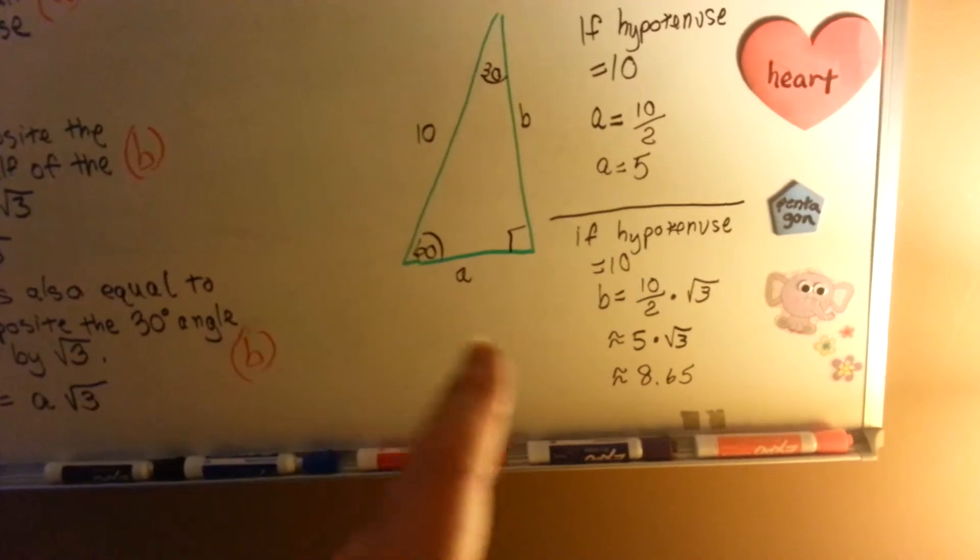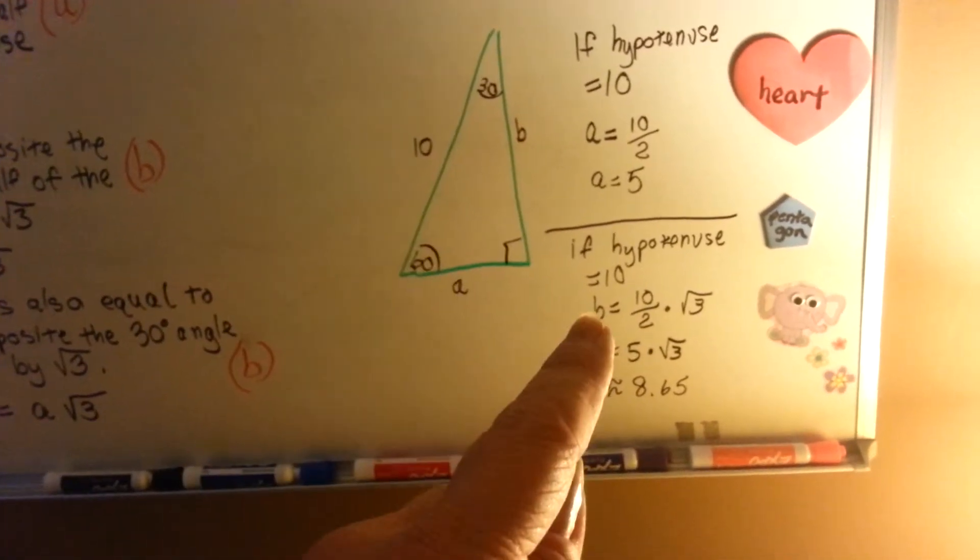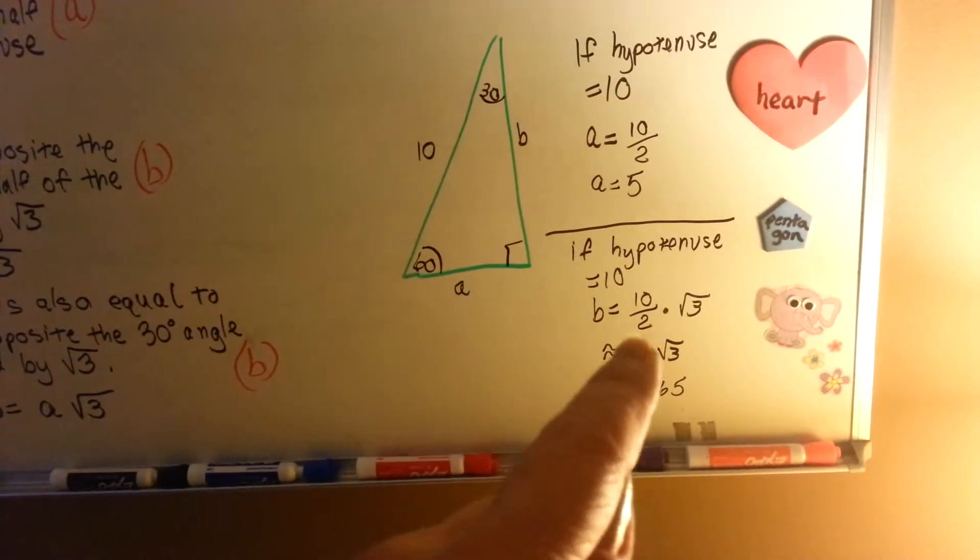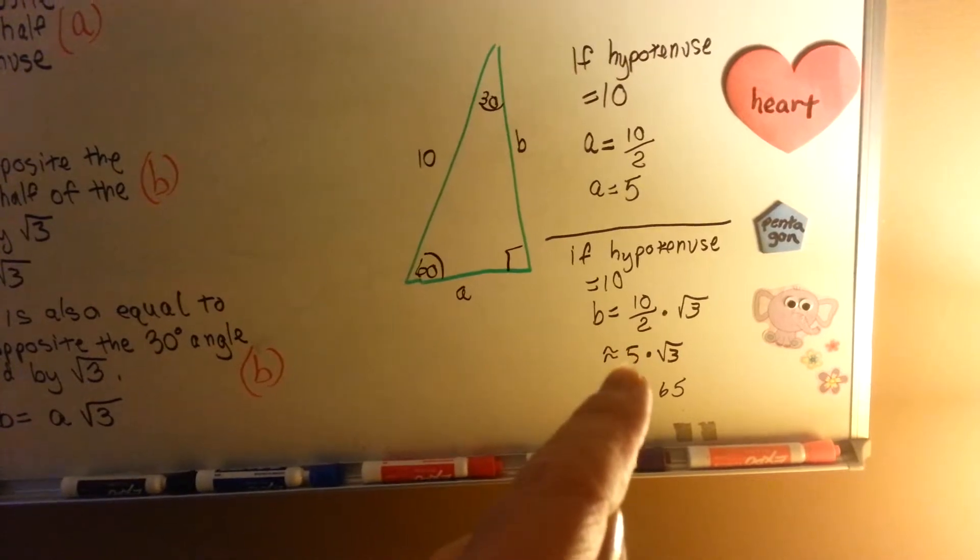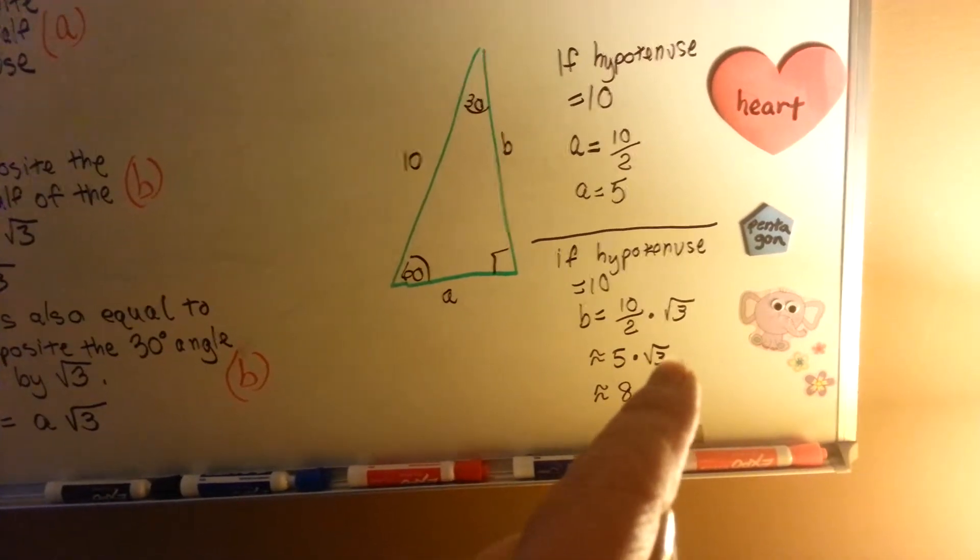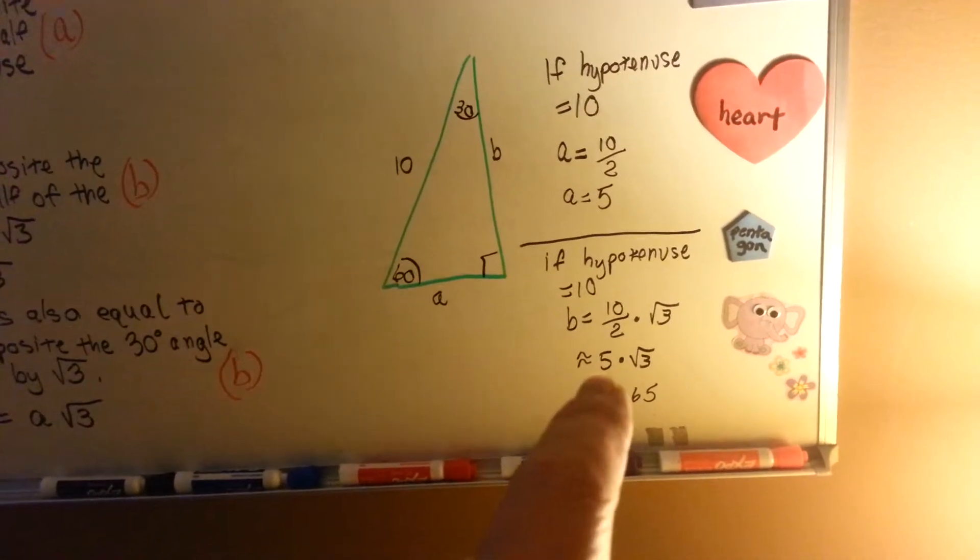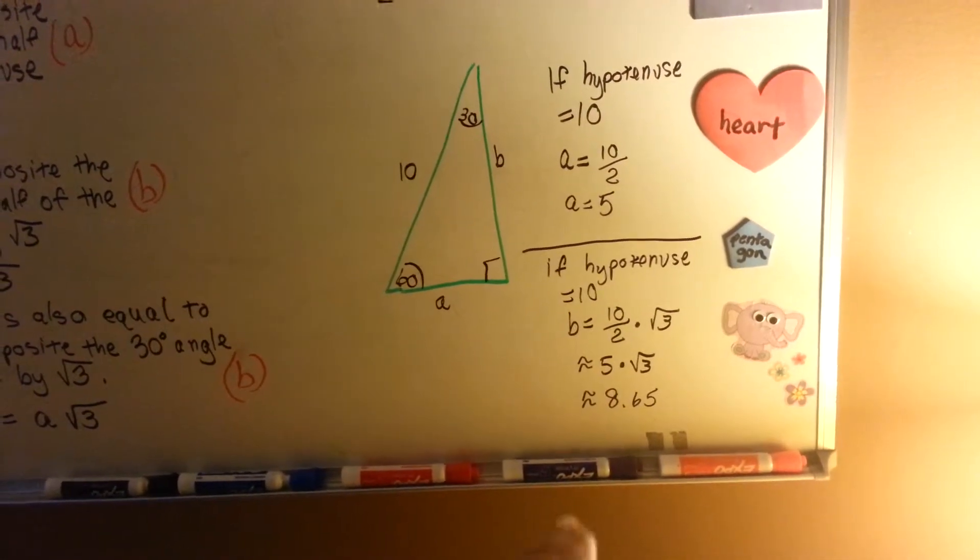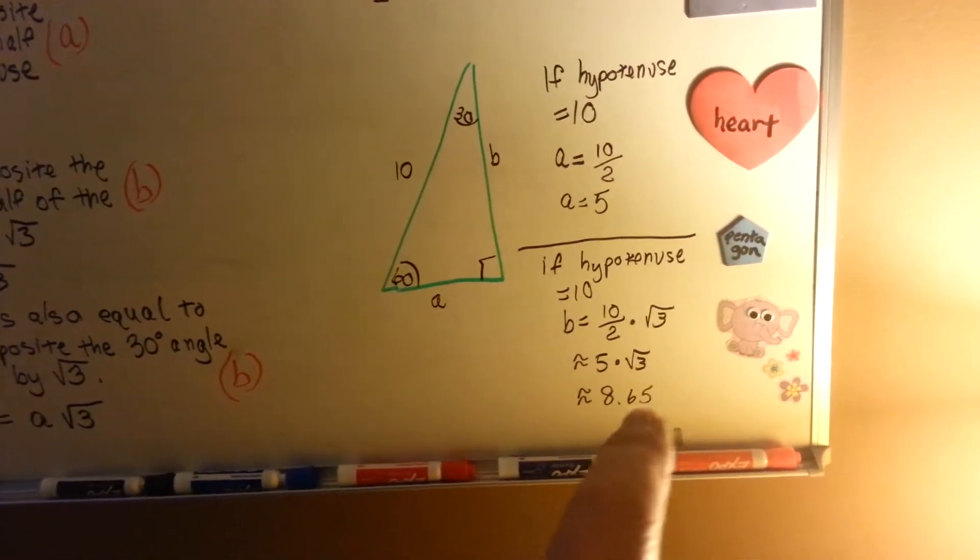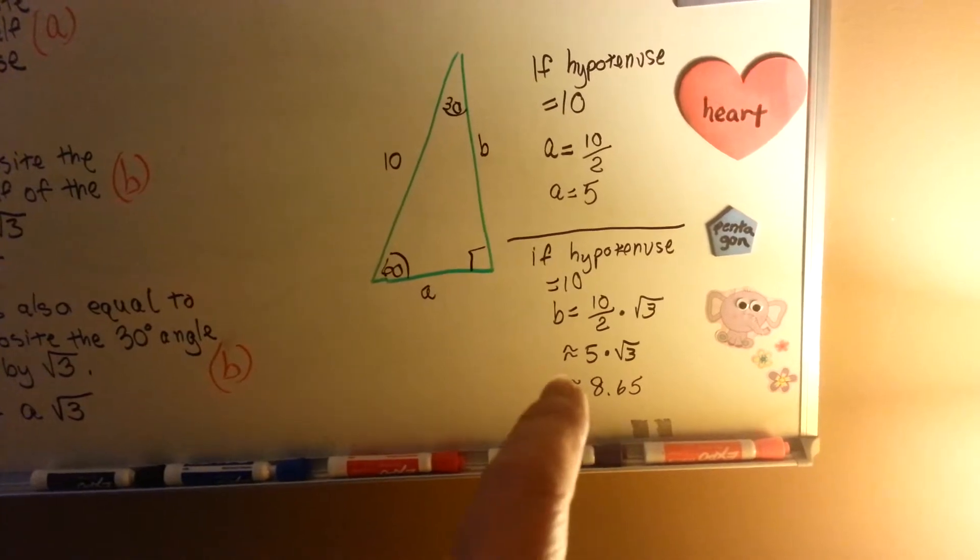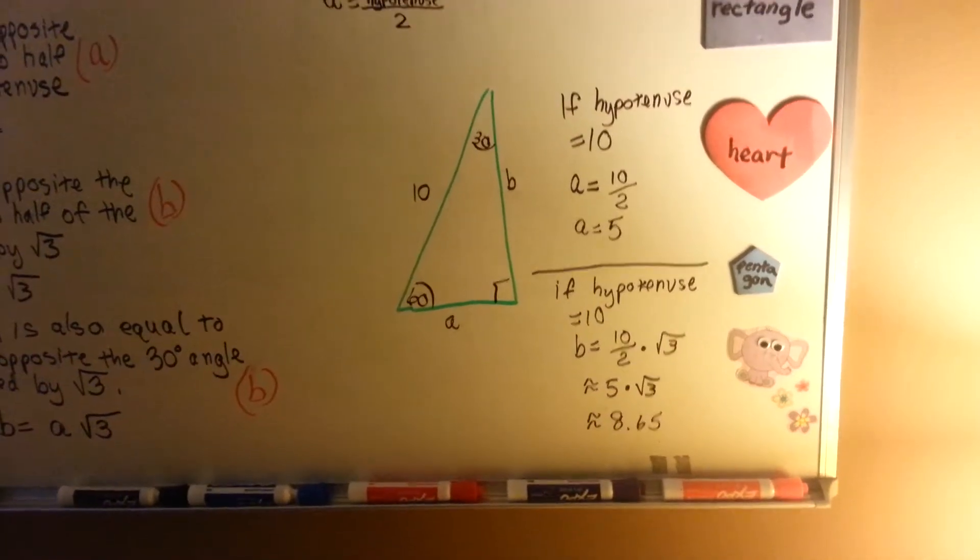If the hypotenuse is 10 and we're trying to find B, B is equal to 10 divided by 2, and then we have to multiply it by the square root of 3. Well, 10 divided by 2 is 5, and the square root of 3 is approximately 1.73, and I'm going to show you that in a second. If you multiply 5 times 1.73, because this is an approximation of the square root of 3, we have to use the approximate sign. So 5 times the square root of 3 is approximately 8.65.